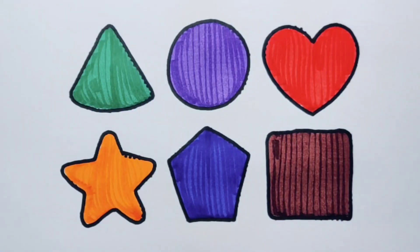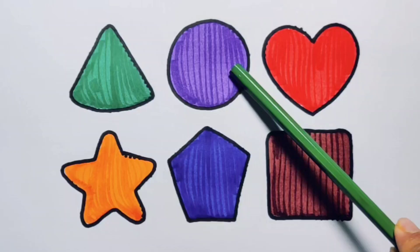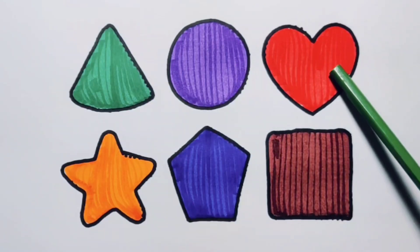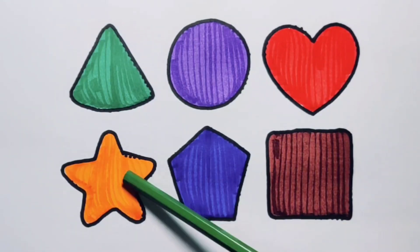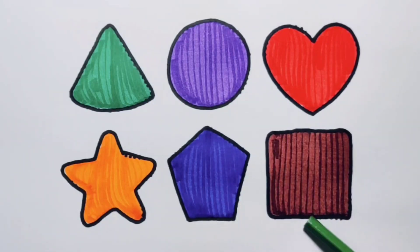What we learned: green color triangle, purple color circle, red color heart, orange color star, blue color pentagon, chocolate color square.